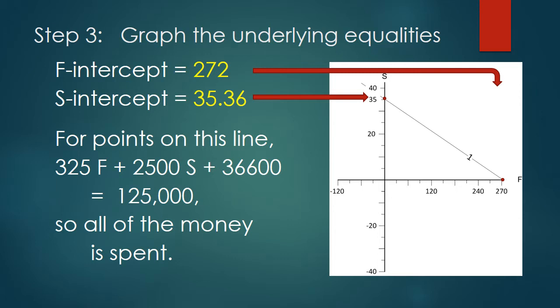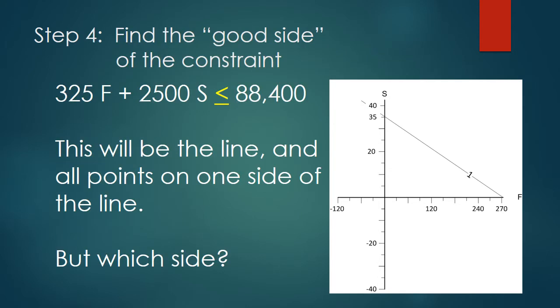Every point on this line spends all the money we've got. Of course, we're not required to spend all the money that we've got. The real constraint didn't require us to spend all the money. It said we had to spend less than or equal to all the money. Well, those points are going to be everything on one side of that line, either the lower left or the upper right. The question is, which one's which? One side spends less money than we've got, one more money than we've got.